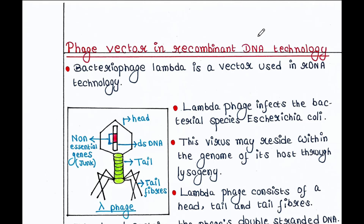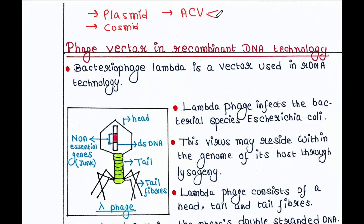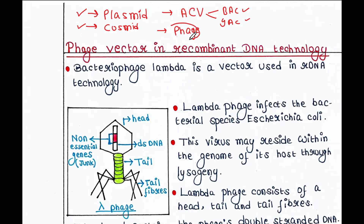There are four types of vectors we generally use in DNA technology: plasmid, cosmid, artificial chromosome vectors — which include BAC and YAC — and phage vectors. Plasmid, cosmid, BAC, and YAC are already covered; today we will talk about phage vectors used in DNA technology.